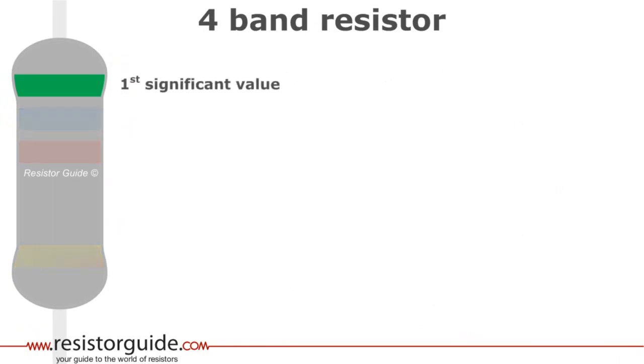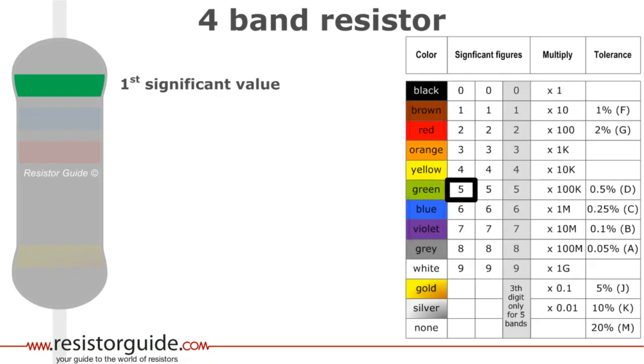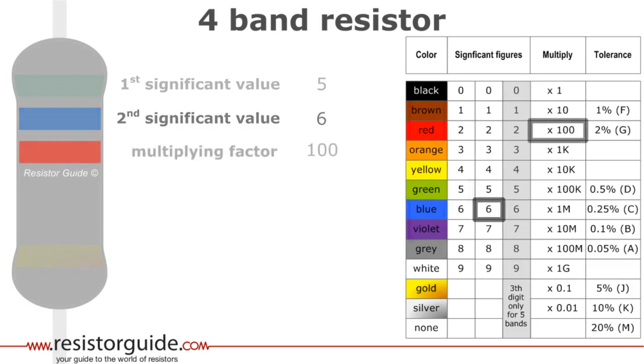The first band represents the first significant value. By using the color code chart, we find that the first significant value for a green band has the value 5. The second band represents the second significant value and has the value 6. For a four band resistor, the third band is the multiply factor. Red means a multiply factor of 100.